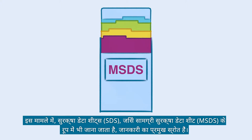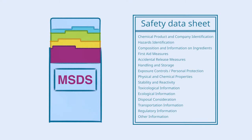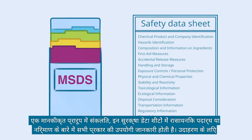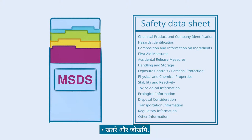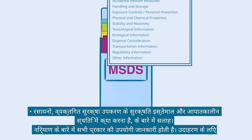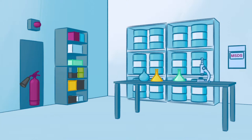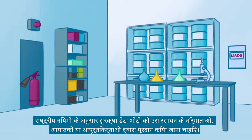Safety data sheets, also known as materials safety data sheets, are the key source of information. Compiled in a standardized format, these safety data sheets contain all kinds of helpful information about the chemical substance or formulation — for example, the hazards and risk, recommendations on the safe use of chemicals, personal protective equipment, and what to do in an emergency. Keep them visible and readily accessible. The safety data sheets should be provided by the manufacturers, importers, or suppliers of that chemical, according to national regulations.